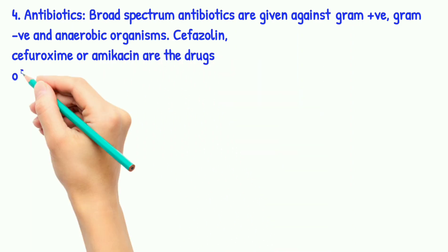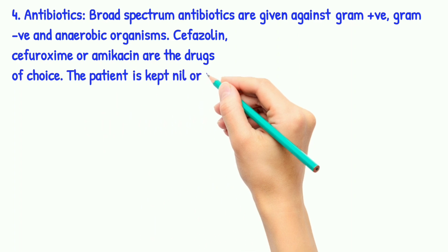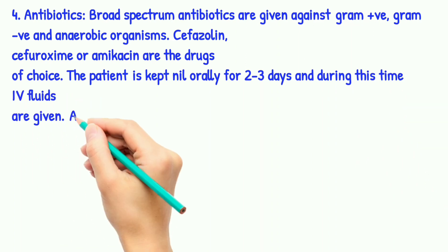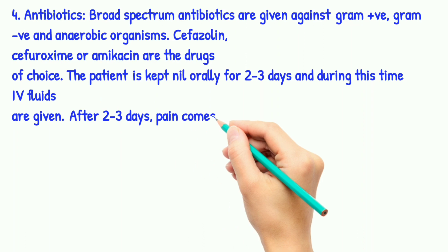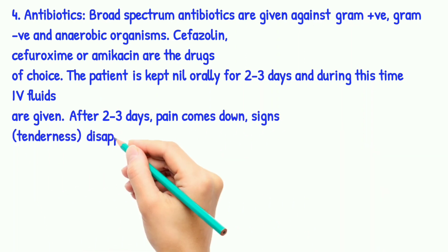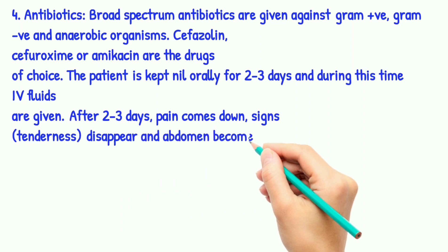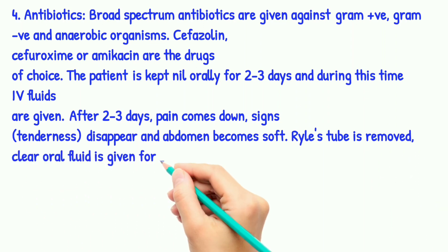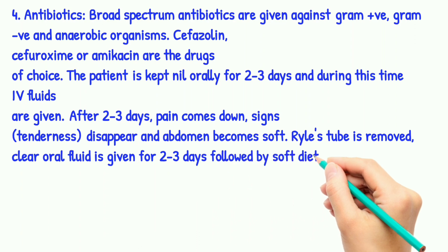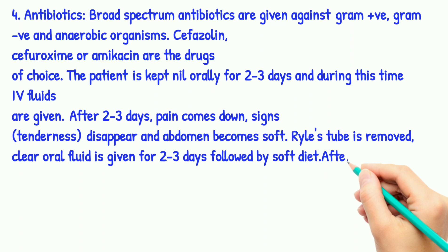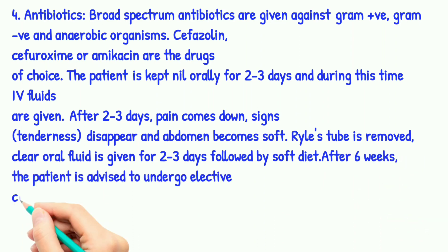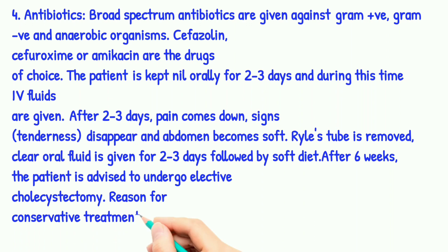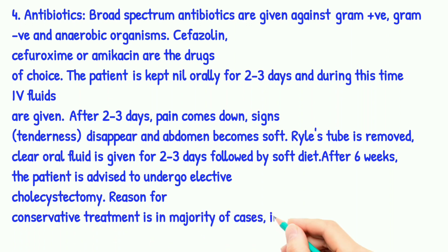The patient is kept nil orally for two to three days, during which IV fluid is given. After two to three days, pain comes down and signs of tenderness disappear; the abdomen becomes soft, and the Ryle's tube is removed. Clear oral fluids are given for two to three days, followed by a soft diet. After six weeks, the patient is advised to undergo elective cholecystectomy. The reason for conservative treatment is that the majority of cases of inflammation will settle down.